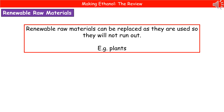Welcome to our review on making ethanol. First thing we need to know is what a renewable raw material is. When we're referring to something that's a renewable raw material, we're talking about one that's going to be replaced because they're not going to run out. A great example is things that come from plants, because once they've been used, we can just grow some more.